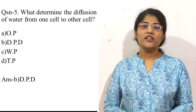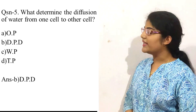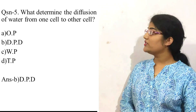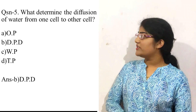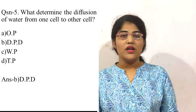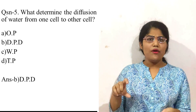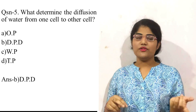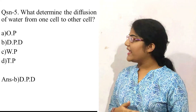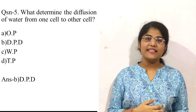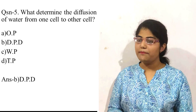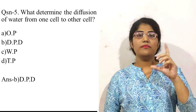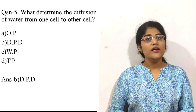Question number five: what determines the diffusion of water from one cell to the other? Options are option A is osmotic pressure, option B is diffusion pressure deficit, option C is wall pressure, and option D is turgor pressure. Options A, C, and D are individual pressures that cannot define any process. Option B, diffusion pressure deficit, is correct because it describes the difference in diffusion pressure between two mediums.